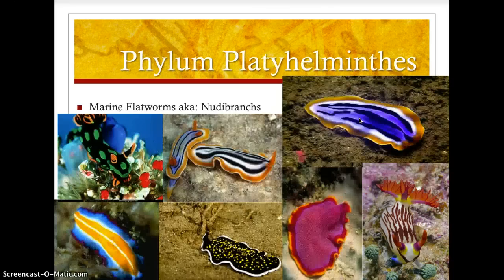Let's look at some examples of Lophotrochozoans. The first phylum — domain Eukarya, kingdom Animalia — is phylum Platyhelminthes. These are the marine flatworms, or flatworms in general. There are also freshwater species of platyhelminths. They have a very colorful appearance and are carnivorous; some will even attack other flatworms, showing that cannibalistic nature.